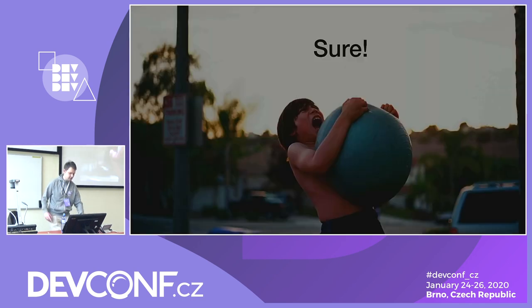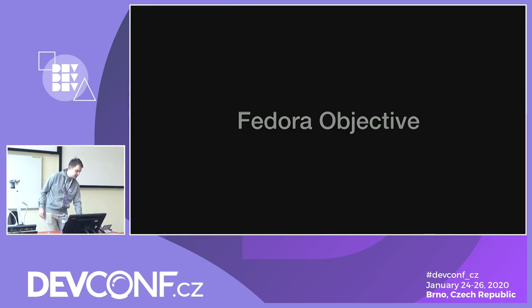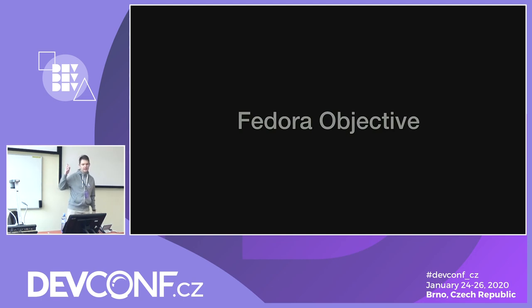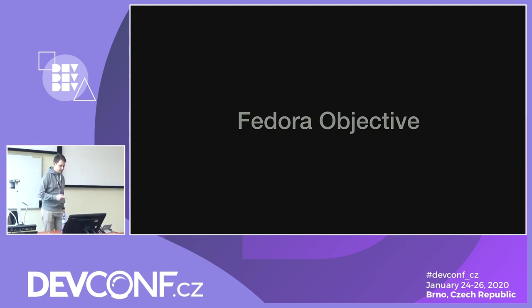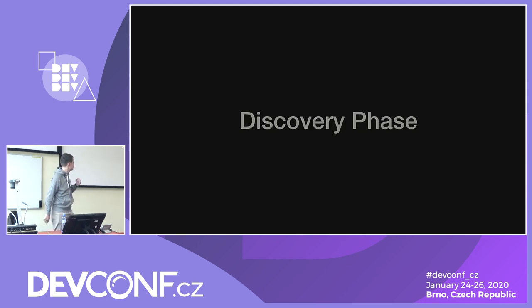I grabbed Fedora and tried to make it smaller, but then I realized that's not the way — I just need a more sophisticated approach. So I proposed something called a Fedora Objective. I don't know how familiar people are with Fedora objectives, but they're high-level strategy goals for the project. I proposed minimization to be one of those, saying I want to minimize things, I'll figure it out, and let you know what happens. I call it the discovery phase.